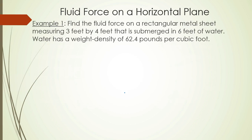Example 1: Find the fluid force on a rectangular metal sheet measuring 3 feet by 4 feet that is submerged in 6 feet of water. Water has a weight density of 62.4 pounds per cubic foot.